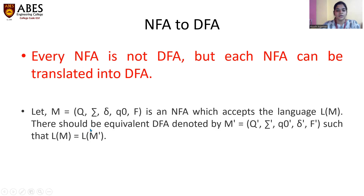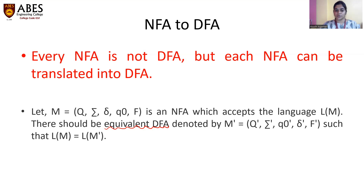NFA conversion to DFA means you are going to draw an equivalent DFA. A small definition: let M be a tuple machine which is an NFA that accepts a language L(M). L(M) basically means any particular string or set of strings accepted by a particular NFA. For that NFA, you need to draw an equivalent DFA, denoted M-dash, where every symbol of M-dash is represented with a dash to identify that we are talking about an equivalent DFA.